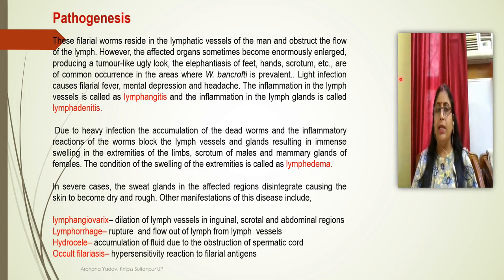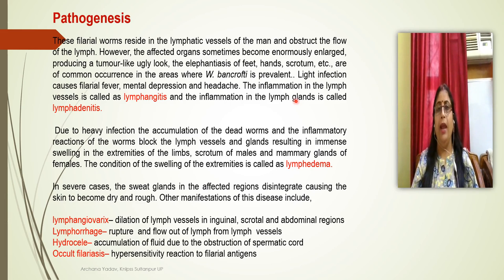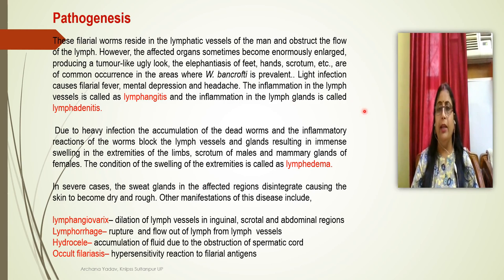Regarding pathogenesis, filarial worms occur in the lymphatic vessels of man and obstruct the flow of lymph, causing the affected organs to swell or enlarge, producing tumor-like bodies in different parts of the body such as the feet, hands, and scrotum. This gives an ugly appearance known as elephantiasis. Light infections cause mental depression, headache, etc.